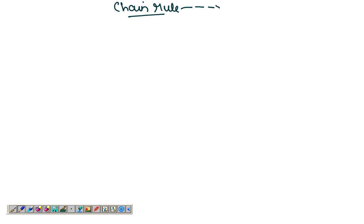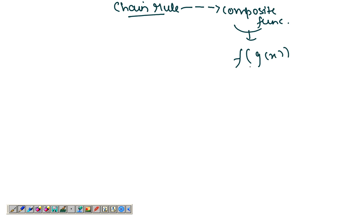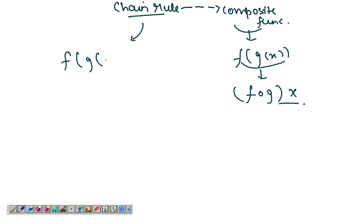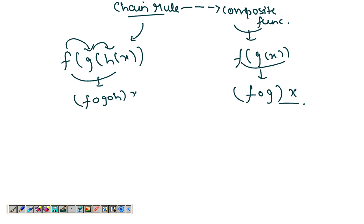Today we're going to talk about the chain rule. The chain rule comes into play when we're talking about composite functions — a function of another function. For example, f of g of x, where g is 4x. Or a function of another function of another function, where f is a function of g and g is a function of h, written as f(g(h(x))). These are composite functions, and that's when the chain rule comes into play.